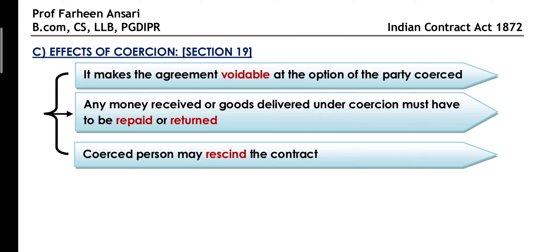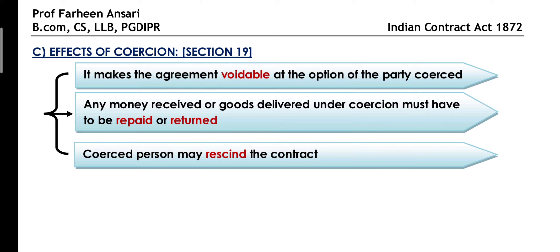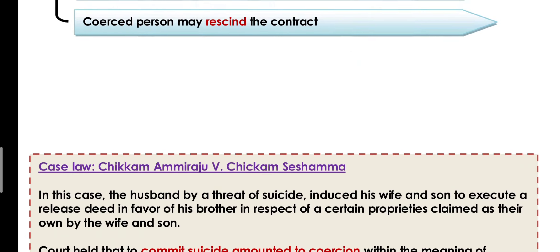Now let's understand the effects of coercion. Number one: coercion makes the agreement voidable — yaane jis person ke saath coercion hua hai woh person us agreement ko perform karne se avoid kar sakta hai. Number two: agar coercion se koi money ya property liya hai toh woh money repay karni hogi aur woh property return karni padegi. And number three: jis person ke saath coercion hua hai woh person contract ko rescind, yaane cancel bhi kar sakta hai.